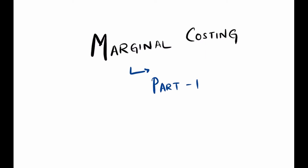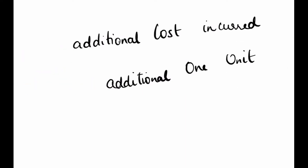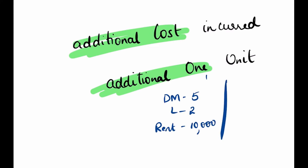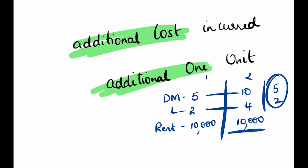We say marginal costing is the additional cost incurred for producing one additional unit. Let me look into an example. I have a direct material of 5, direct labour of 2, and fixed rent of 10,000. This is the cost for producing one unit. If I have to produce two units, my direct material becomes 5 × 2 = 10, direct labour becomes 2 × 2 = 4, and rent remains 10,000. Therefore, the additional cost I am incurring is 5 and 2, which are basically my variable costs — this we call marginal cost.